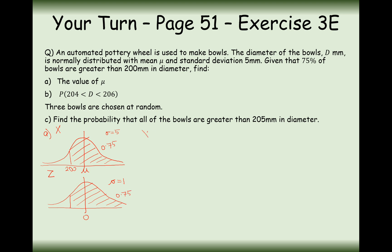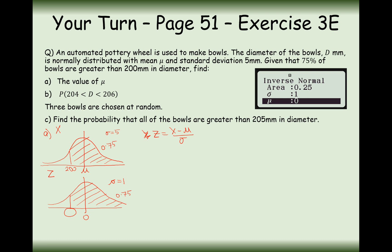We need Z equals X minus mu over sigma, but first we need the z value corresponding to 200. On the standard normal distribution we know the mean and standard deviation, so use the inverse normal mode. The area to the left of the marker is 0.25 (since 75% is above), giving a z value of minus 0.6745.